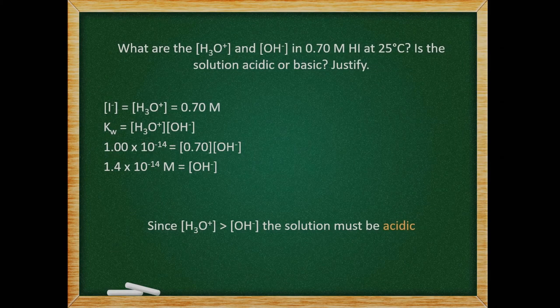What are the concentrations of hydronium and hydroxide in 0.70 molar hydroiodic acid at 25 degrees Celsius? Is the solution acidic or basic? Justify. Since we are dealing with a strong acid, its concentration will be equal to the hydronium concentration. This gives us 0.70 moles per liter. We can plug this value into our Kw expression to get the concentration of hydroxide. Since the concentration of hydronium is greater than the concentration of hydroxide, the solution must be acidic.